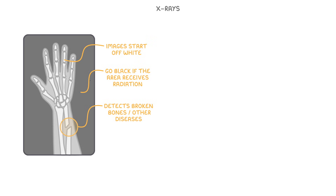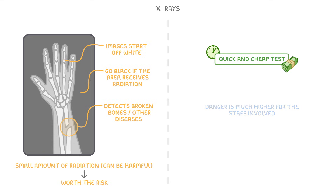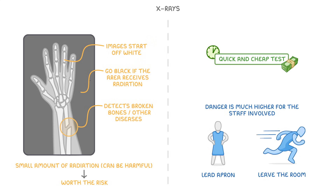We use X-rays to detect broken bones and other diseases, and although they do give the person a small amount of radiation, which can be harmful, it's generally such a low dose that it's worth taking the risk. It's also a very quick and cheap test. The danger is much higher for the staff involved, though, and so they generally wear lead aprons to stop the X-rays and leave the room when the X-rays are being fired.